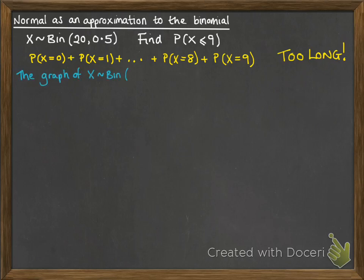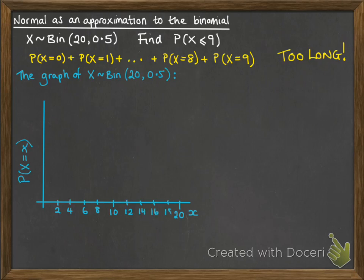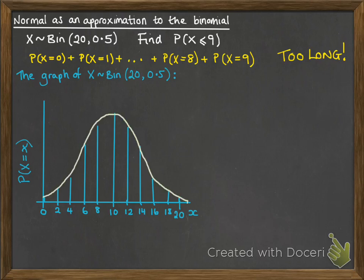So if we consider the graph of this binomial distribution it would look like this. We've got the probability up the side and the values of x down the bottom, so it could be anywhere between 0 and 20 and it will look like this. Now the shape of this is very similar to the normal distribution. So we could use the normal distribution to approximate the binomial.